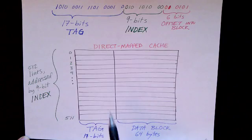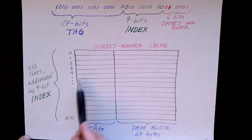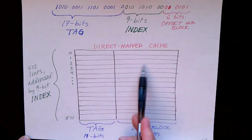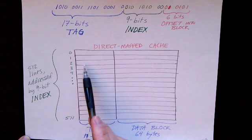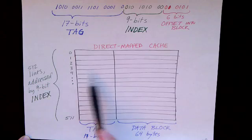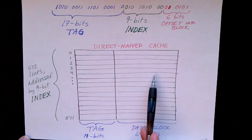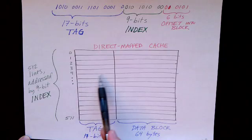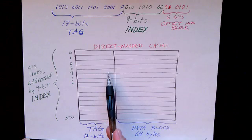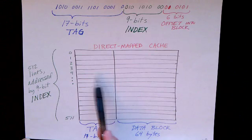So the direct map cache will store not only the data for the block, but it will also store the tag. So each line has not only the 64 bytes here, but it also has 17 bits for the tag. There may be some other bits for valid and dirty and so on, but these aren't shown here.